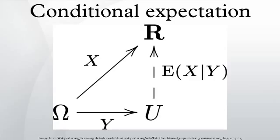When X and Y are both discrete random variables, the conditional expectation of X given the event {Y = y} can be considered as a function of y for y in the range of Y, where the range of X is also accounted for. If X is a continuous random variable while Y remains discrete, the conditional expectation is expressed using the conditional density of X given Y = y. If both X and Y are continuous random variables, then the conditional expectation is expressed using the joint and marginal densities.